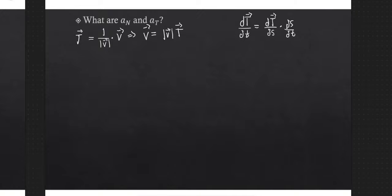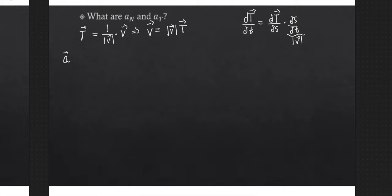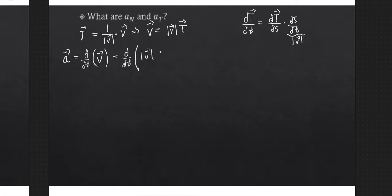We want to break down acceleration, so it makes sense to think of acceleration as the derivative of velocity with respect to time. We're writing velocity as a product of a scalar-valued function — speed — times a vector-valued function, the unit tangent vector T. Using the product rule: derivative of the first times the second, plus derivative of the second times the first. So we get (d²s/dt²)T plus (ds/dt)(dT/dt).